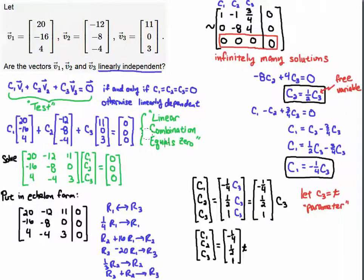So I'm just going to factor out the c3 and let c3 be some parameter t. Now I'm going to try to convince you that I've actually found c1, c2, c3 that are not zero so that when I add these columns together I get zero.